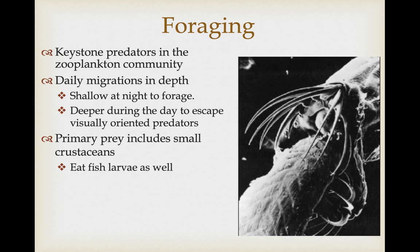Chaetognaths are really important predators — a keystone species in many zooplankton communities. They make daily migrations in depth: during the night they come to shallower areas where zooplankton are abundant to forage, and during the day they go to deeper depths to escape visually oriented predators. Their translucent bodies help protect them from being found by predators. Their prey primarily include small crustaceans, but they will also eat fish larvae.